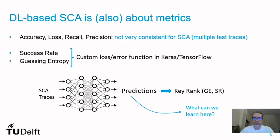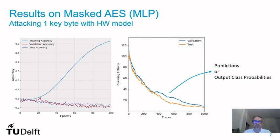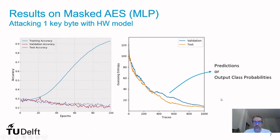We ask ourselves what we can learn from these predictions. As a visual example of the metrics problem: we are attacking a masked AES implementation with results for a one-key-byte attack with the Hamming weight model. Test and validation accuracy are very low and decreasing — so judging by these metrics, we would say the attack is not successful. But if we compute guessing entropy from the predictions on the test traces, we can see it is actually decreasing, meaning it is just a matter of having more test traces to reach a successful attack. Output class probabilities have a lot of important information for side-channel analysis.